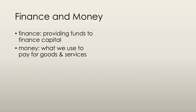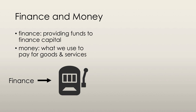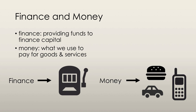Finance is the activity of providing the funds that finance expenditures on capital. When we talk about finance, we talk about how households and firms obtain and use financial resources and how they cope with the associated risks. Money is what we use to pay for goods and services and factors of production. When we talk about money, we talk about how households and firms use it, how much they hold, how banks create and manage it, and how the quantity of money influences the economy.